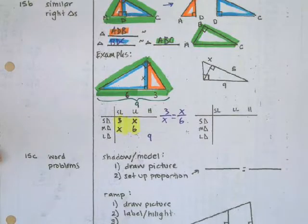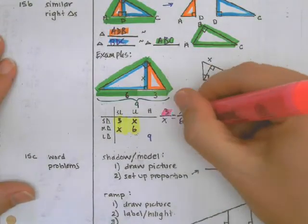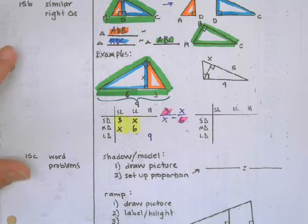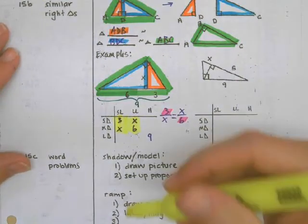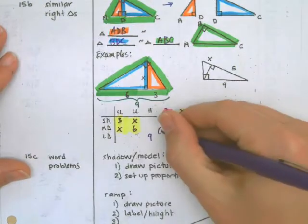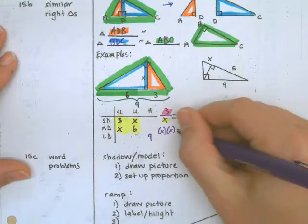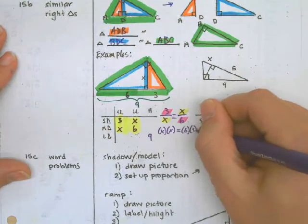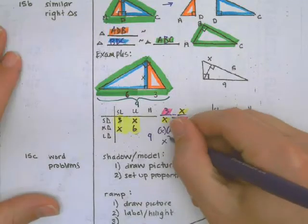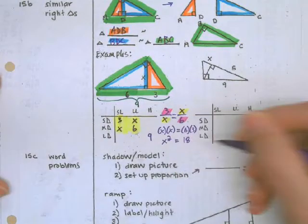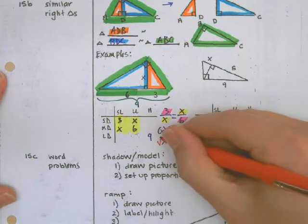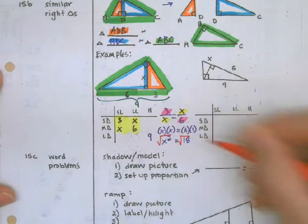So I'm going to cross multiply three and six together as well as X and X. That's going to make X squared equals 18. To get rid of the exponent, take the square root of both sides.